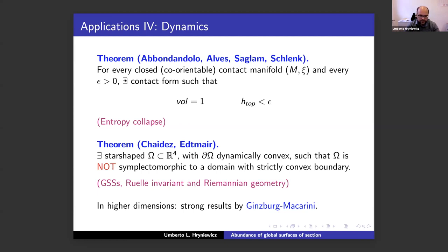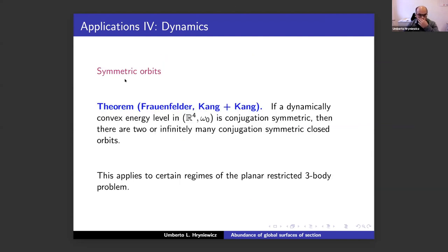In higher dimensions we don't yet have methods that can solve this problem, but there are very strong results by Victor Ginzburg and collaborators. Another application I'd like to mention is a combination of results by Frauenfelder and Kang about symmetric orbits: if one has a dynamically convex energy level in ℝ⁴ which is conjugation-symmetric, then there are two or infinitely many conjugation-symmetric closed orbits. This is a very nice statement and applies to certain regimes of the planar circular restricted three-body problem.